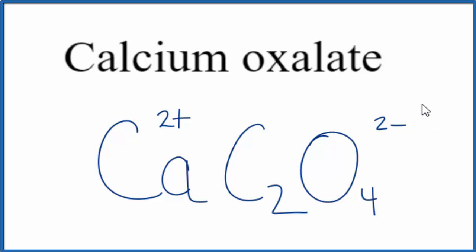So two plus and two minus, that adds up to zero. We have a net charge of zero. So this is the formula for calcium oxalate: Ca C2O4. This is Dr. B. Thanks for watching.